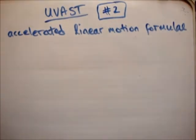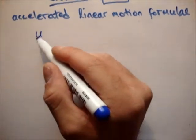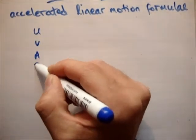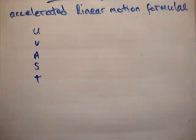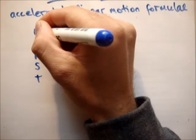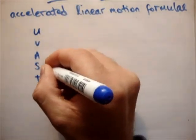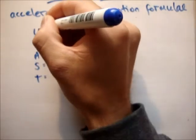So these formulae basically make up everything that you will do in this chapter and they're quite simple, they're very straightforward. First of all we have the following variables: u, v, a, s, and t. Now you don't need to stick with these variables but I'd suggest you do because everybody does the same and it's just easier to do it that way.